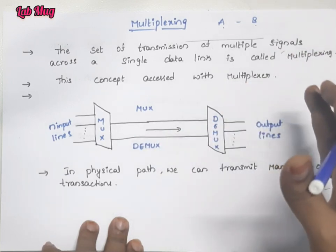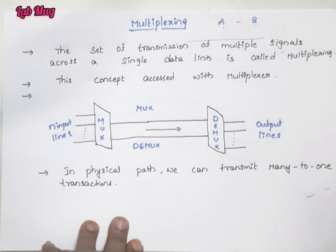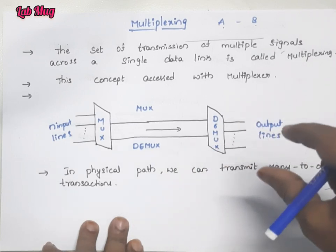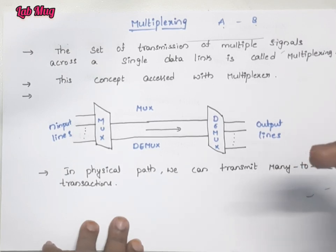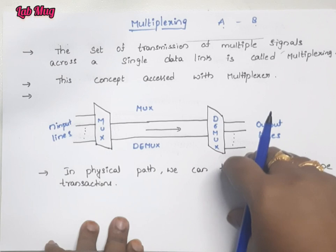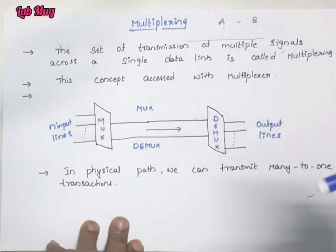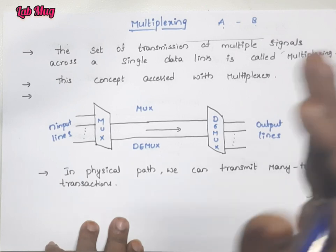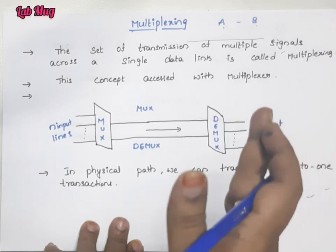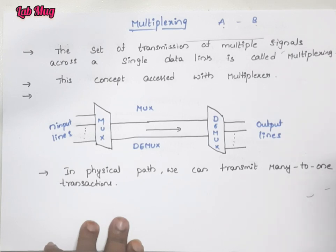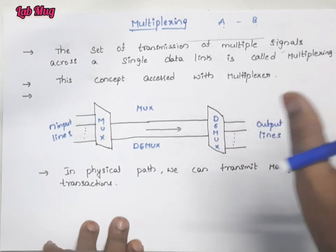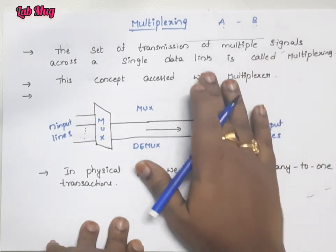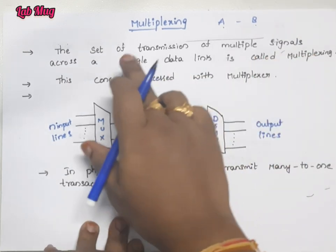When multiple receivers are available, instead of direct one-to-one communication with separate lines, we use the concept of multiplexing to transmit data and signals from multiple senders over a single shared data link.